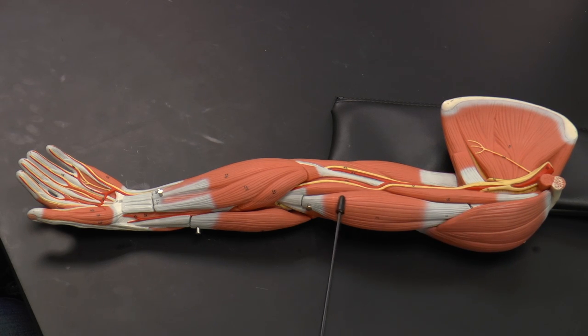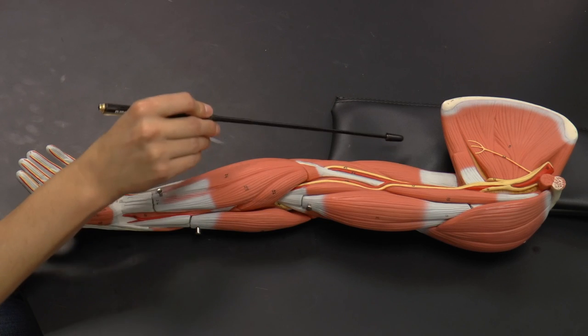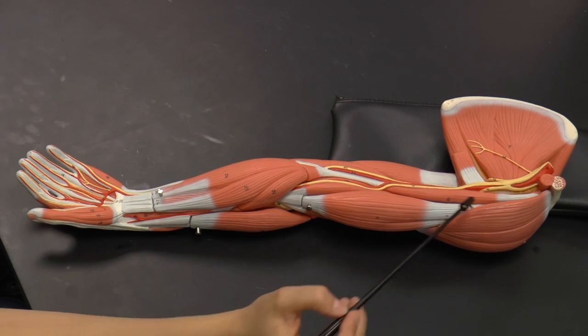Here we have our biceps brachii, one of the major muscles of the arm. This is what pops up when you make a muscle to try to impress someone, so the biceps brachii. Coming over again, working our way from lateral to medial. So here's the biceps brachii.